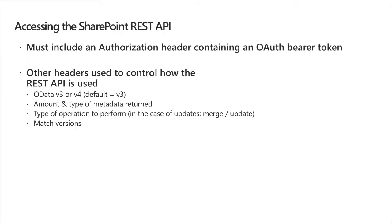The way you access the SharePoint REST API from off the server is that you must include an authorization header in the HTTP request that contains an OAuth bearer token. Or, when you're on the SharePoint server — as in the case of a SharePoint Framework component — because you're already logged in, you're going to have cookies on your machine that will be included with every single request. That's going to give us access to the SharePoint REST API, and we're automatically going to be authenticated with cookie-based authentication.